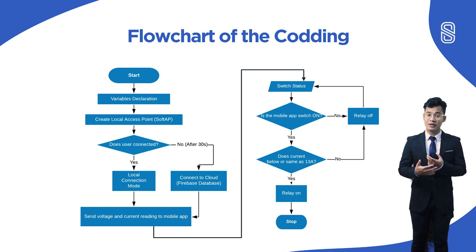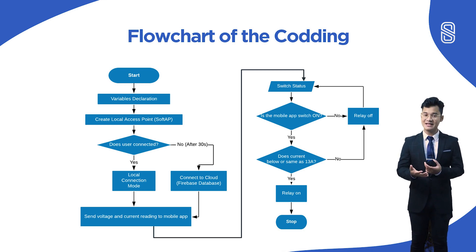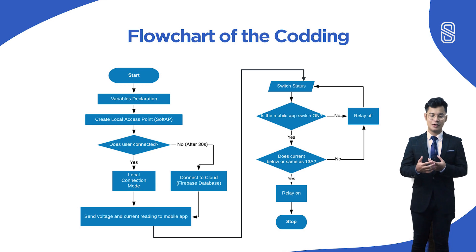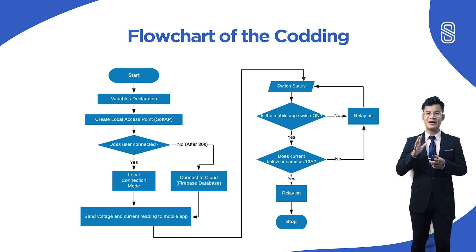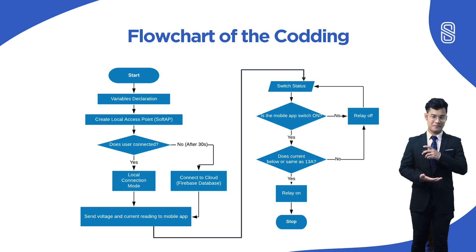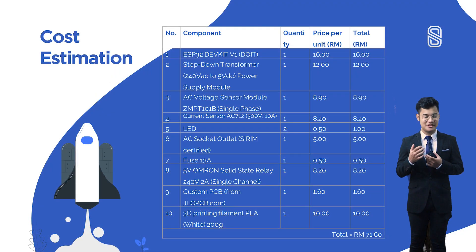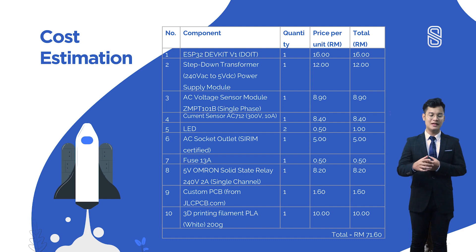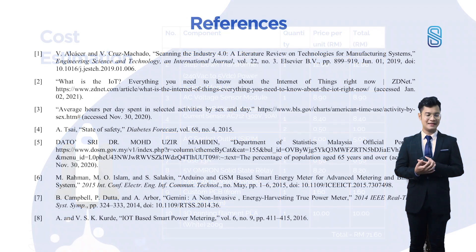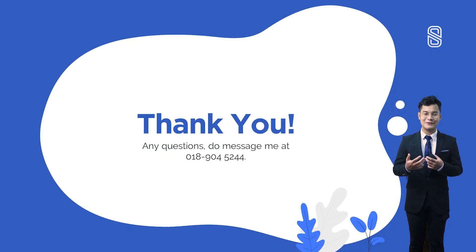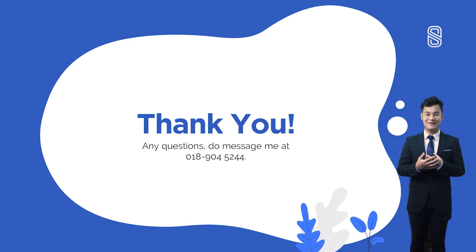The first condition checks if the mobile app switch is on; if yes, it checks whether the current is within the safe range. If yes, the relay turns on; if either condition is false, the relay turns off. This is where relay protection comes in — if the current is higher than 30 amps, the relay turns off. Finally, the total cost estimation of this hardware is just RM71.60. Thank you for listening to my FYP presentation. I hope you have a blessed day.